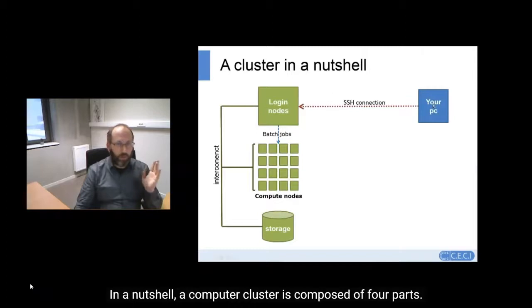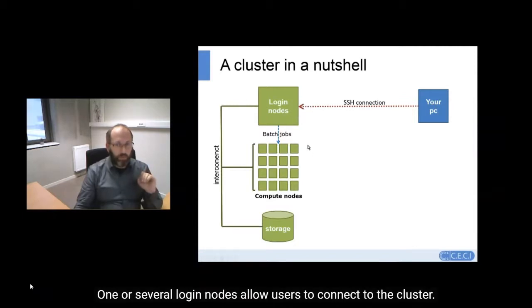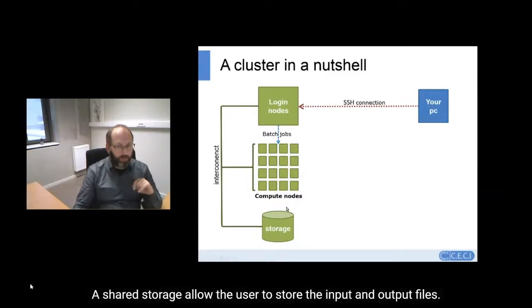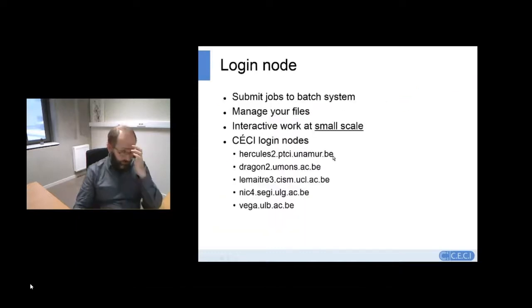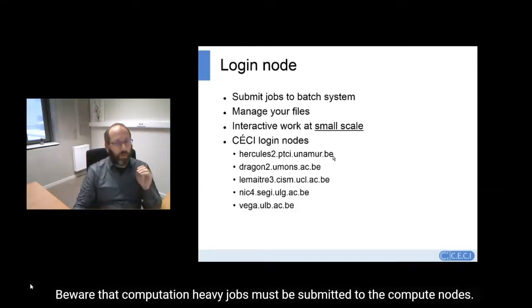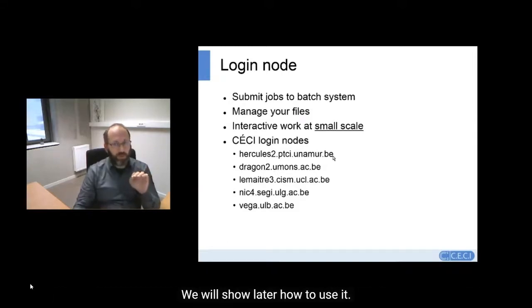In a nutshell, a computer cluster is composed of four parts. One or several login nodes allow users to connect to the cluster. The computing power is provided by several dedicated computers called compute nodes. A shared storage allows users to store input and output files. And a high-performance network interconnects all three. From a login node, you can manage your files, prepare your input files, and submit jobs to the system. Beware that computation-heavy jobs must be submitted to the compute nodes.